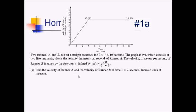For part A, we want the velocity of runner A and runner B at time two seconds, with units of measure — meters per second. For runner A, we figure out the value of V on the graph when we plug in two. It looks close to six, but to be safe we need an equation. This is a piecewise linear function, so it's a line through the origin. We're going up ten and over three, giving a slope of ten-thirds.